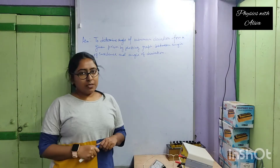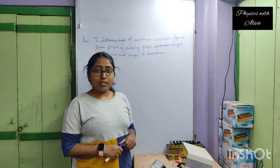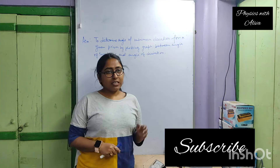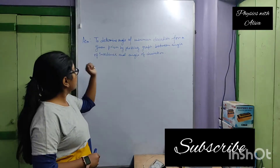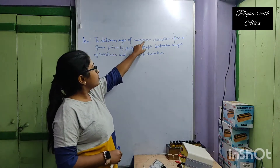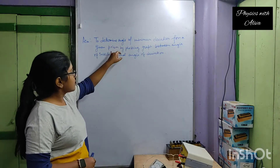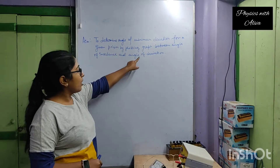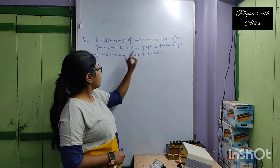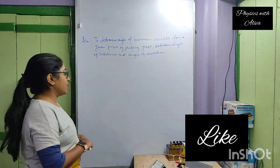Hello everyone, welcome back to your channel. Today we will discuss another practical. The aim of the practical is to determine the angle of minimum deviation for a given prism by plotting a graph between angle of incidence and angle of deviation.